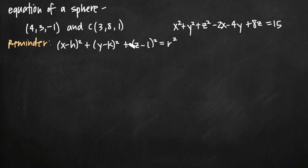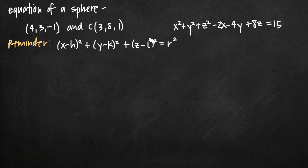As a reminder, I've written the equation of a sphere in standard form here. This should look really similar to the equation of a circle from two dimensions. The formula for the equation of a circle is exactly this but when we move from two variables to three variables and add the third dimension of z, we just add the quantity z minus l squared, giving us the equation of a sphere instead of a circle.